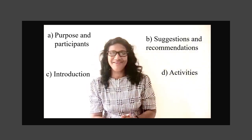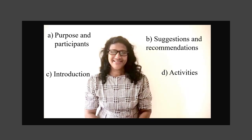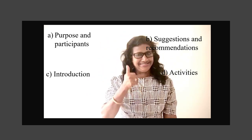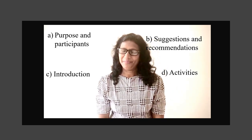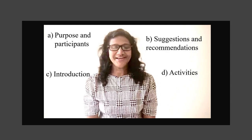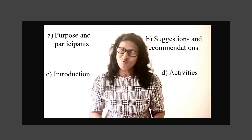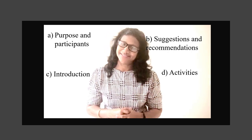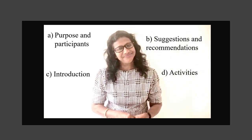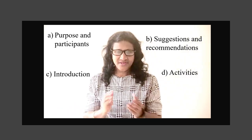You managed to do it even before the time was up, didn't you? Let's check the answers. Which heading should come to paragraph A? Yes — purpose and participants. What's the heading for B? Suggestions and recommendations. Next, C — this is the paragraph which gives details of what we have written, so it is the introduction. The remaining heading, activities, will go to D. So all of you got 4 out of 4. This is simply marvelous.